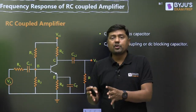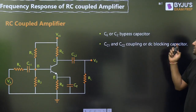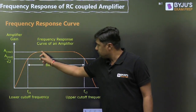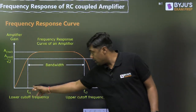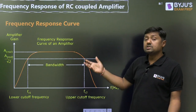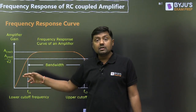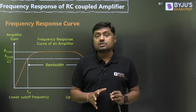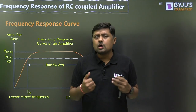CE is the bypass capacitor; CC1 and CC2 are coupling or DC blocking capacitors. This is the frequency response. At a certain point the gain is constant — the gain is constant means it is independent of frequency. On the x-axis we have frequency; on the y-axis we have the magnitude of the gain. In mid frequency it is constant and independent of frequency. At high frequency there is a fall in gain, and at low frequency there is again a fall in gain. In mid frequency region, all the coupling capacitors will act as short circuit because their values are very very high.